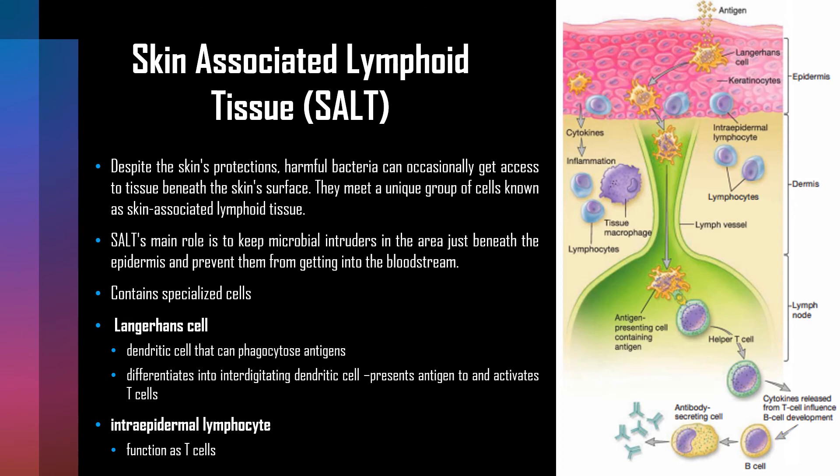Keratinocytes make up 90% of the epidermis and are capable of secreting cytokines that cause an inflammatory response to invading pathogens. Langerhans cells internalize antigen and move to a lymph node where they differentiate into dendritic cells that present antigen to helper T cells. Intraepidermal lymphocytes may function as T cells that can activate B cells to induce an antibody response.